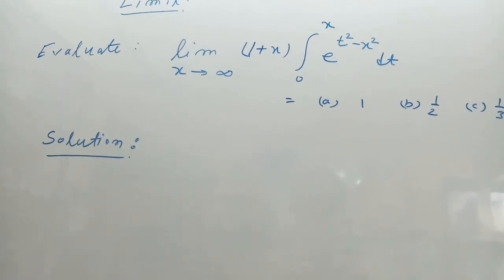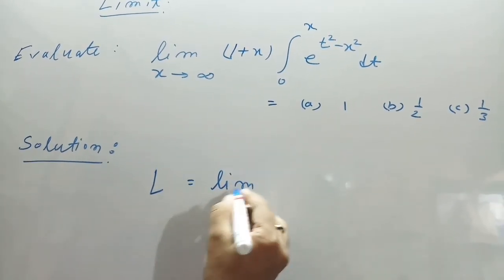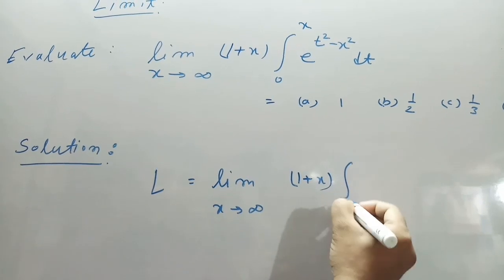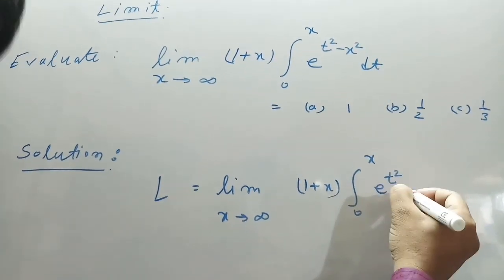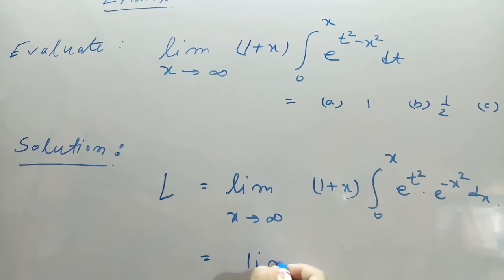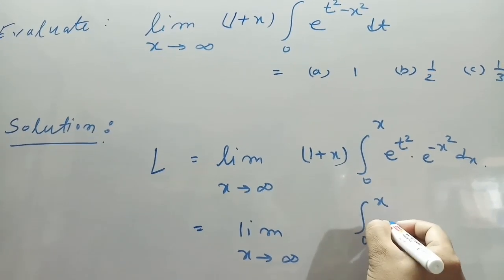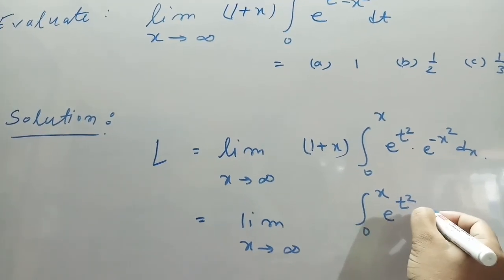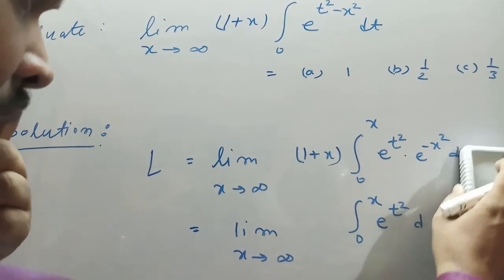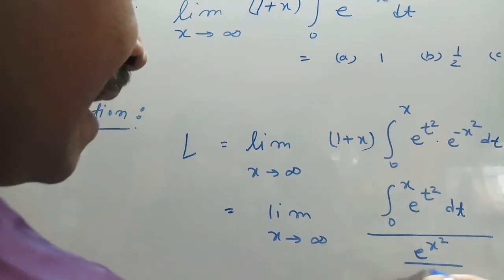The solution: let L equal the limit as x tends to infinity of (1 + x) times the integral from 0 to x of e^(t²) · e^(−x²) dt. This can be rewritten as the limit of the integral from 0 to x of e^(t²) dt, divided by e^(x²) / (1 + x), bringing (1 + x) into the denominator.